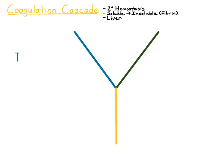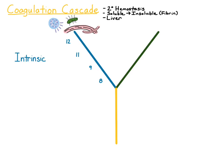The coagulation cascade can be broken into three different pathways, and I'll represent them here as a Y. The first pathway is the intrinsic pathway, and it consists of four coagulation factors: factors 12, 11, 9, and 8. This pathway is activated by lots of different things, including subendothelial collagen. It can also be activated by platelet granule contents, bacterial components such as LPS or endotoxin, and finally, clay activates this pathway as well.